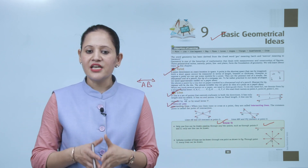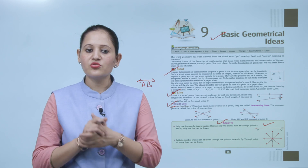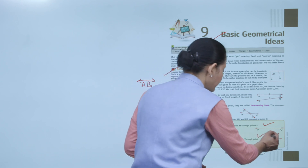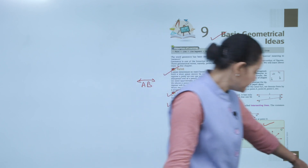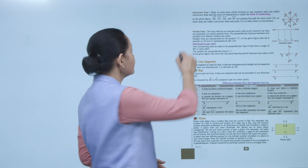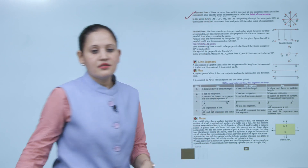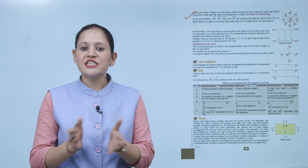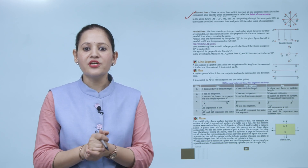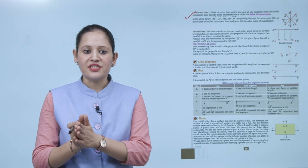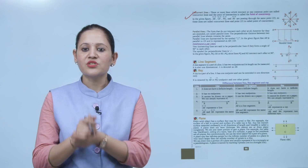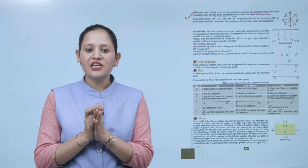An infinite number of lines can be drawn through one point. As shown in the figure, through point O, many lines can be drawn. Next is concurrent lines. Three or more lines which intersect at one common point are called concurrent lines. The point of intersection is called the point of concurrency. In the figure, lines AB, CD, PQ, and RS all pass through the same point O.